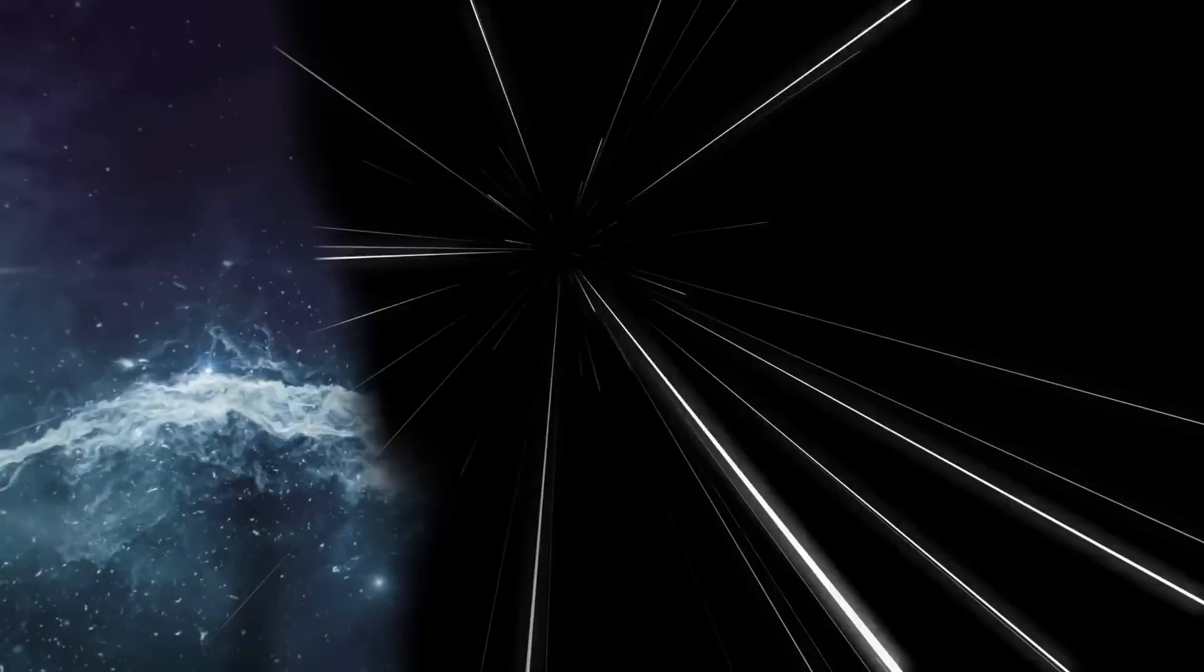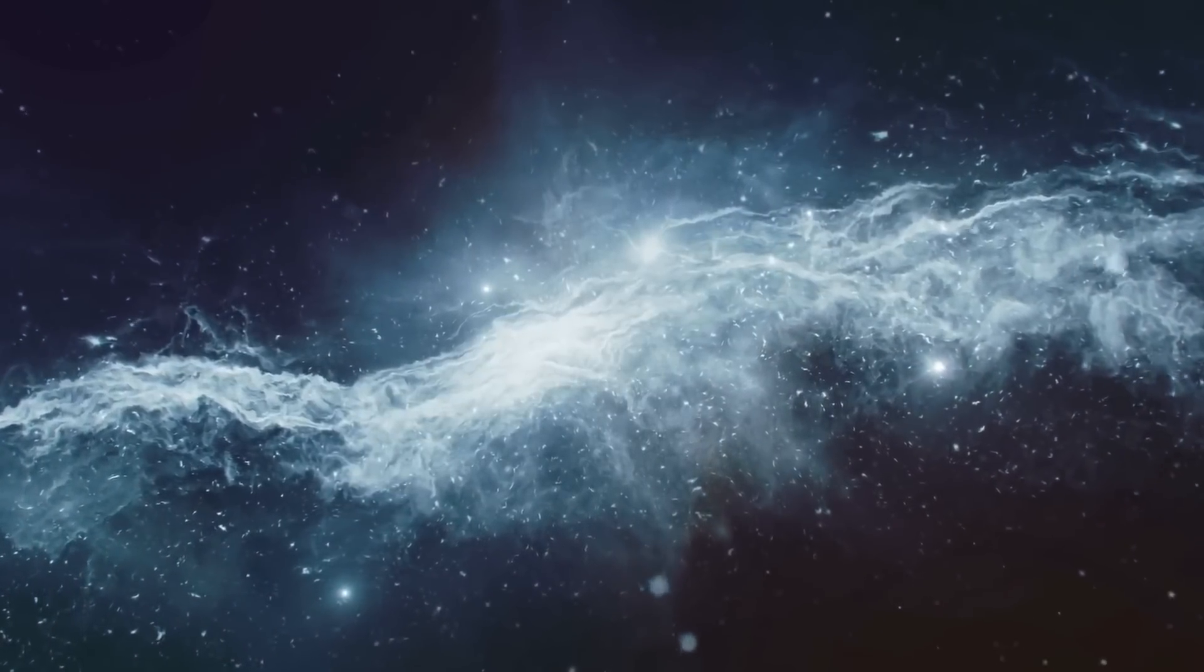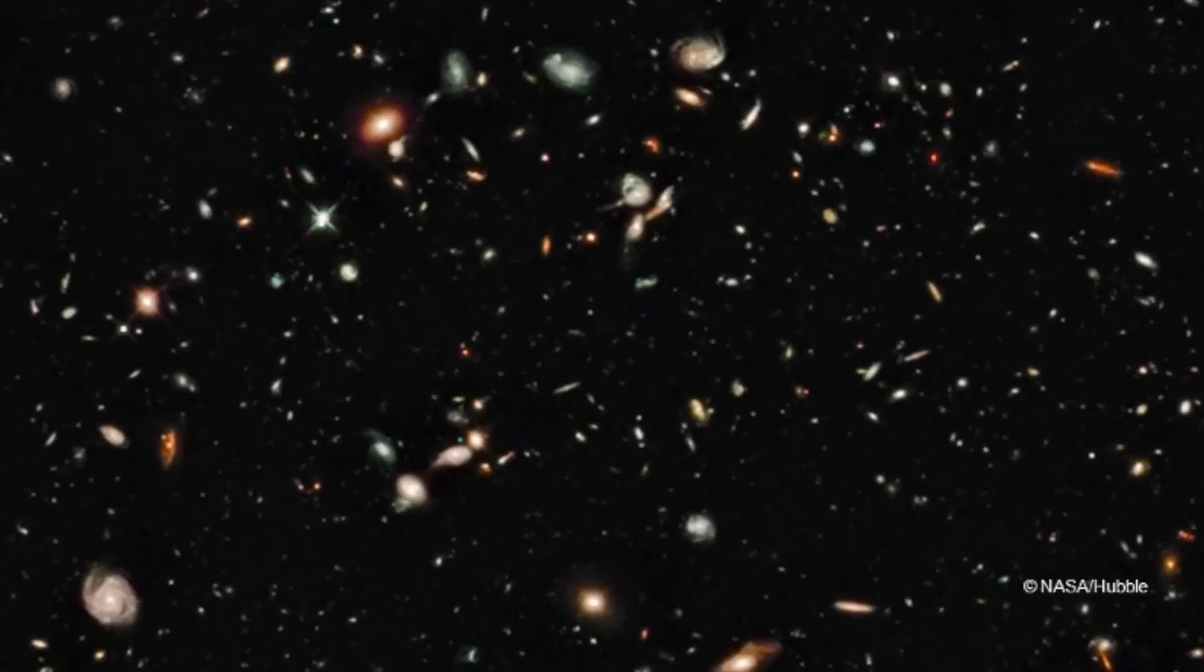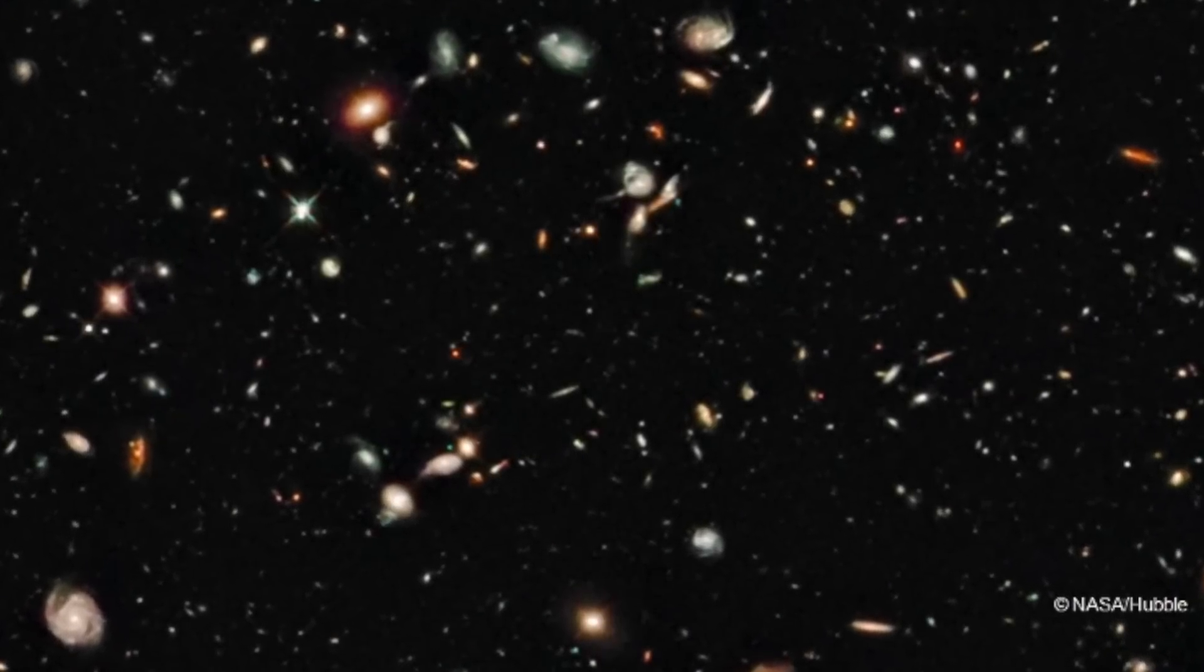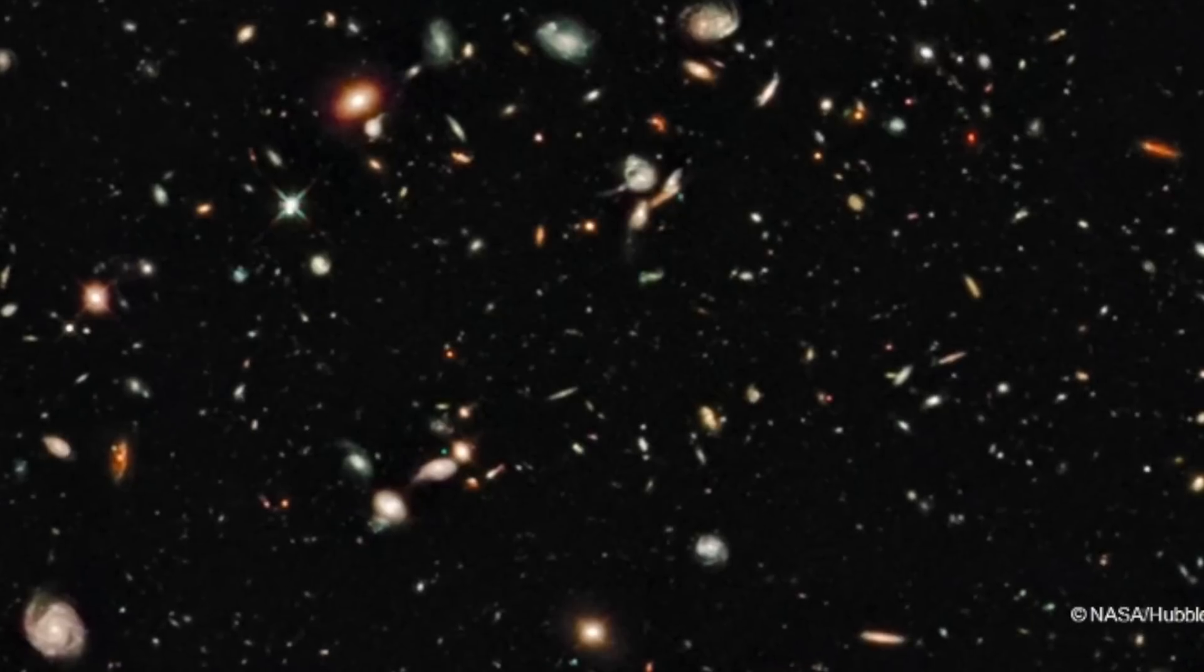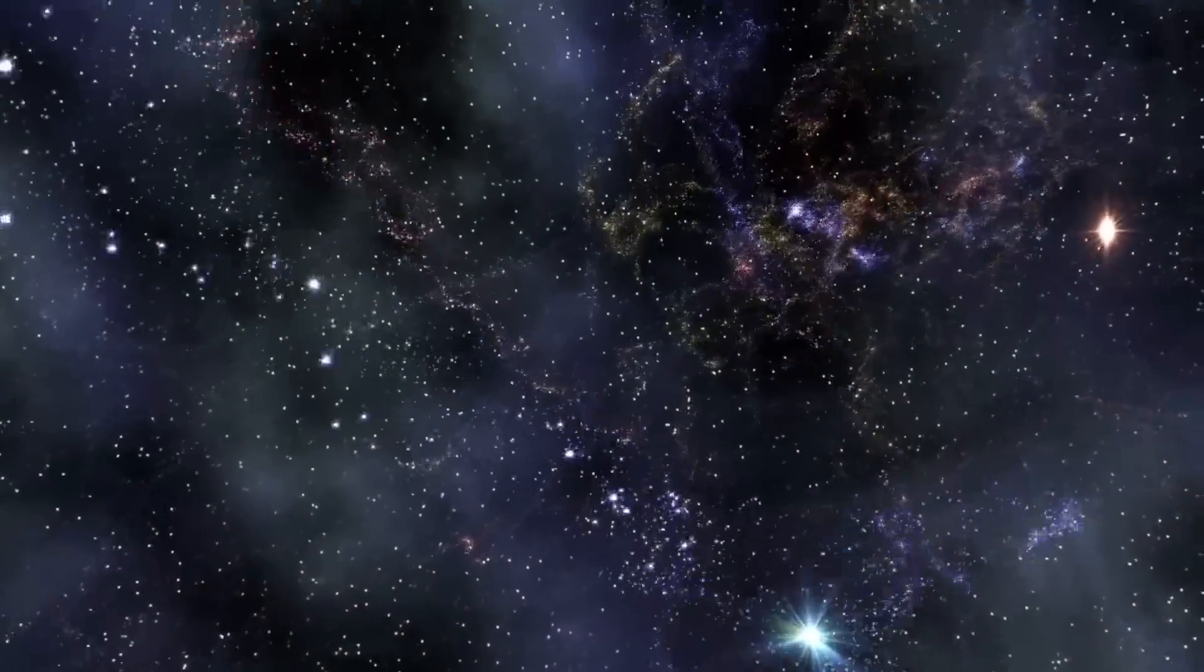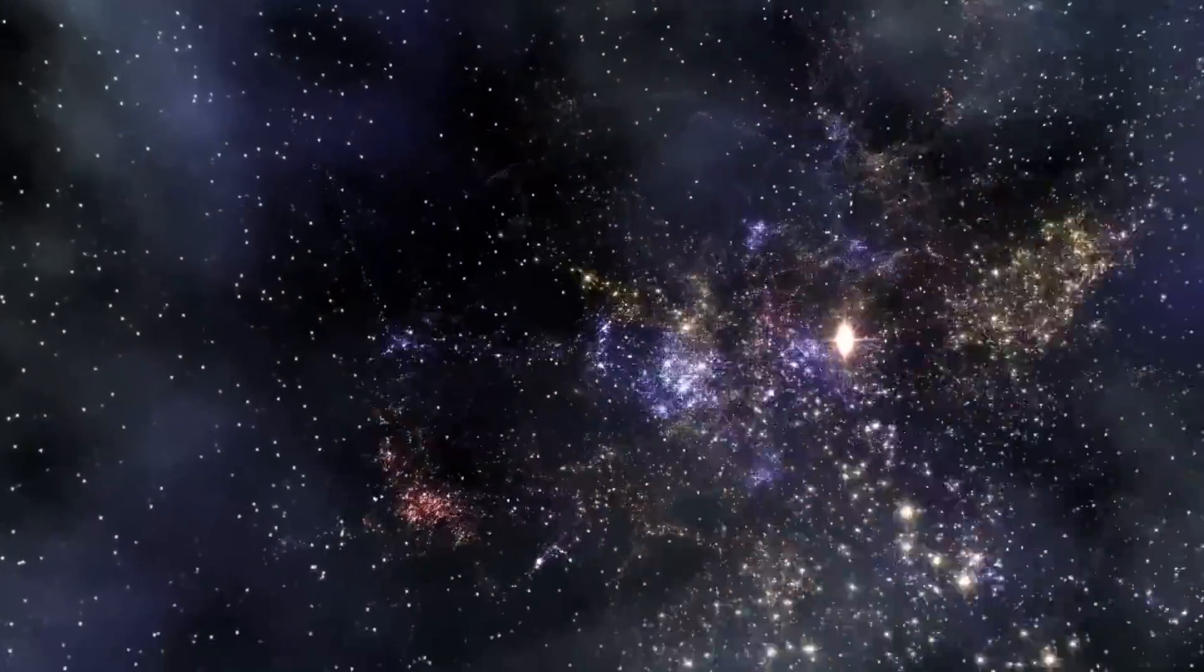But the observable universe contains only the light that has had time to reach us. This also means that the observable universe is getting bigger and bigger. However, the universe is also finite. The limited amount is also called the Hubble volume, after the telescope that has given us the most distant views of the universe so far. We will never be able to see beyond this limit, so it's basically the only universe with which we can ever interact.